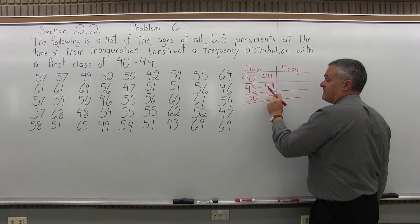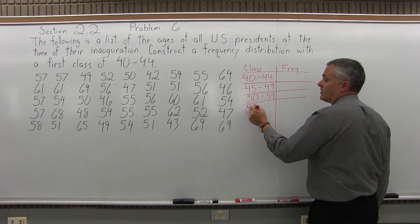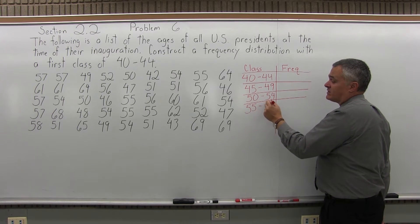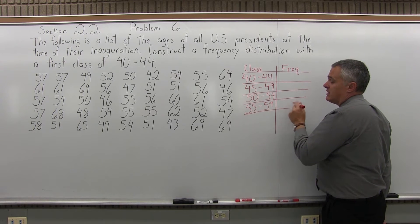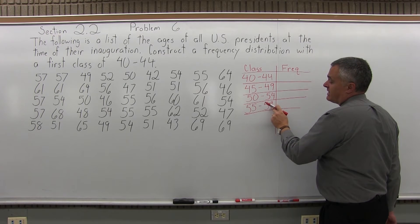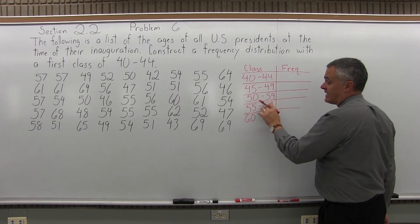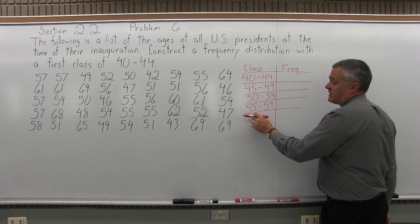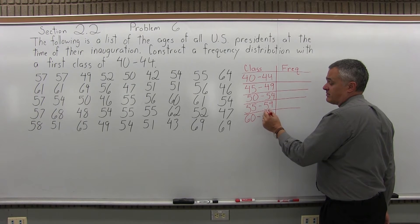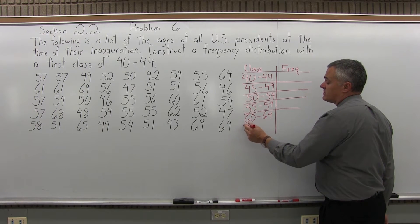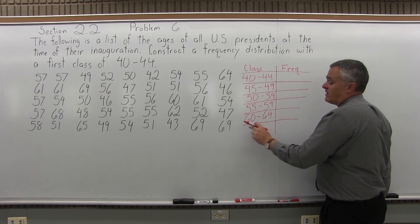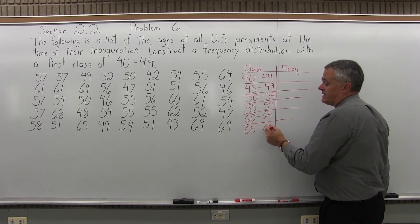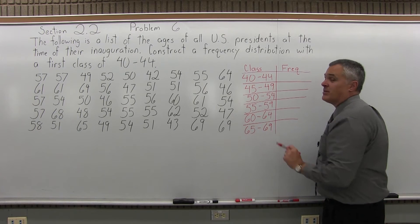If the third class ends at 54, the fourth class begins at 55, and 55 plus 4 is 59. If the fourth class ends at 59, the fifth begins at 60, and 60 plus 4 is 64 — still not quite big enough for my oldest president. The next class starts at 65, and 65 plus 4 is 69, which will accommodate the oldest president in the list.